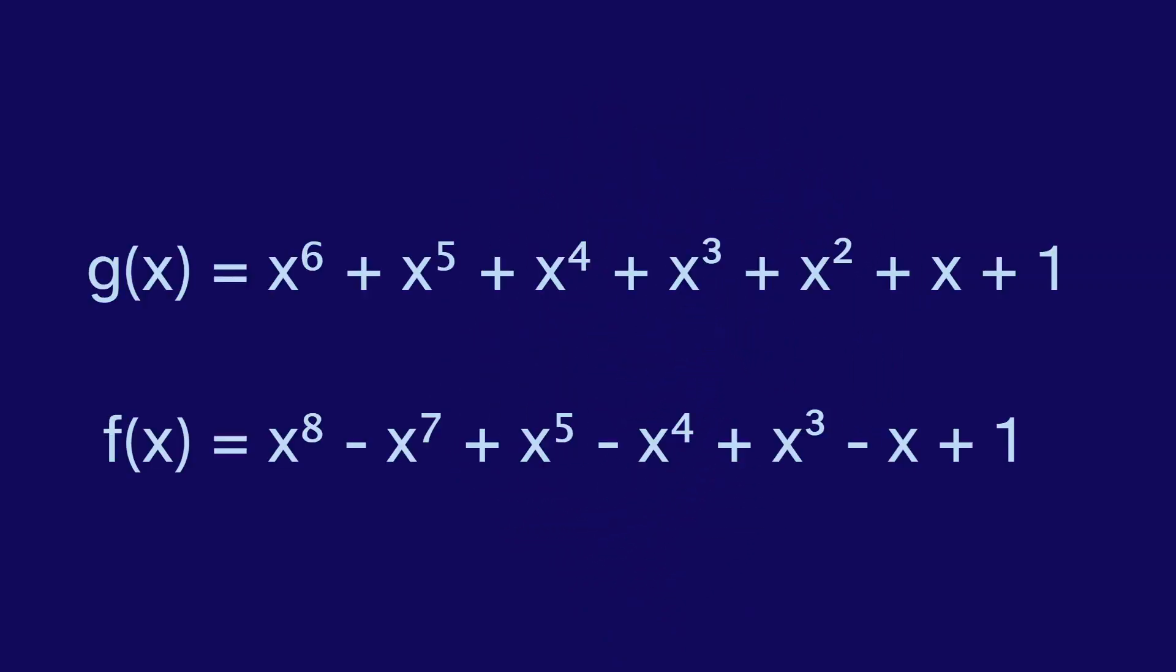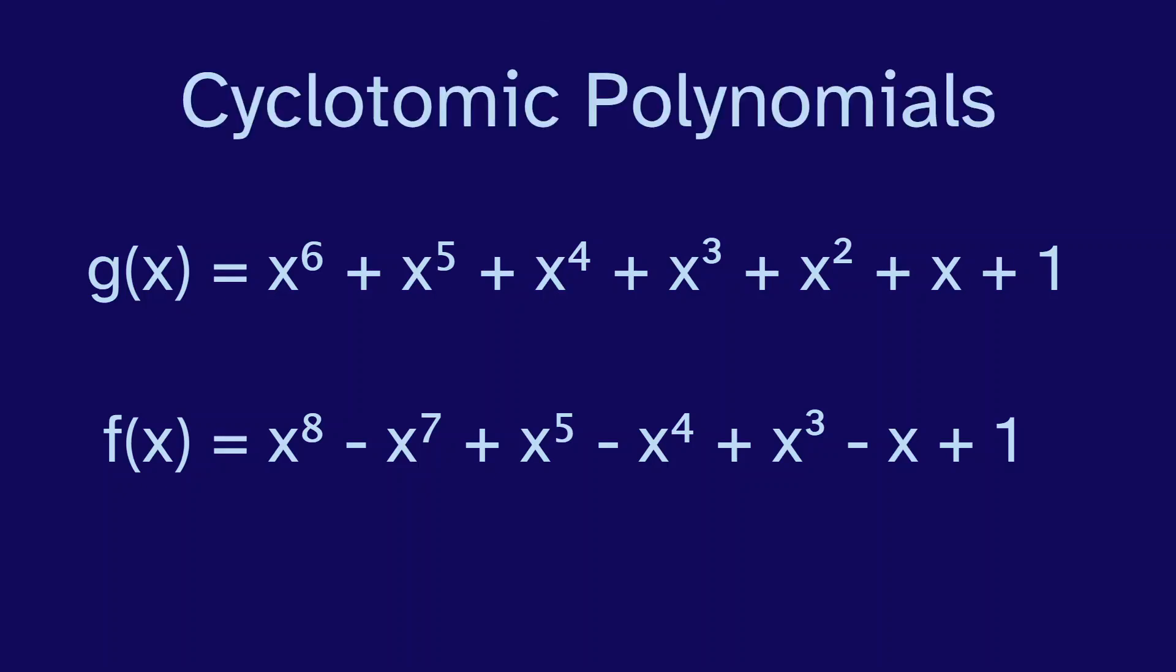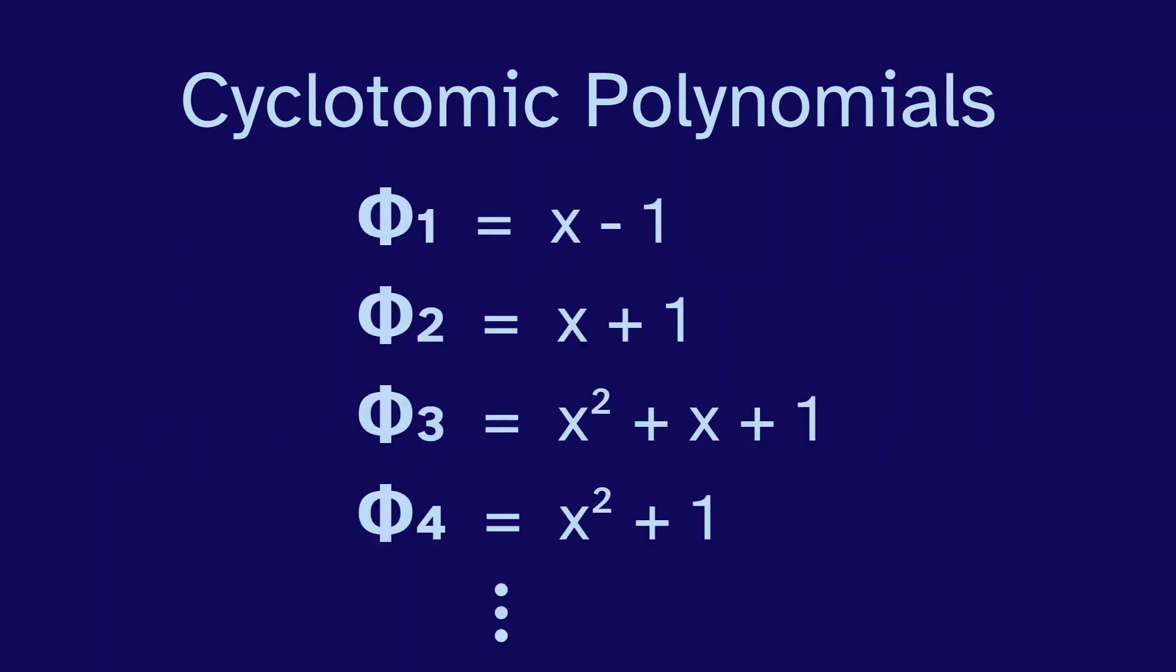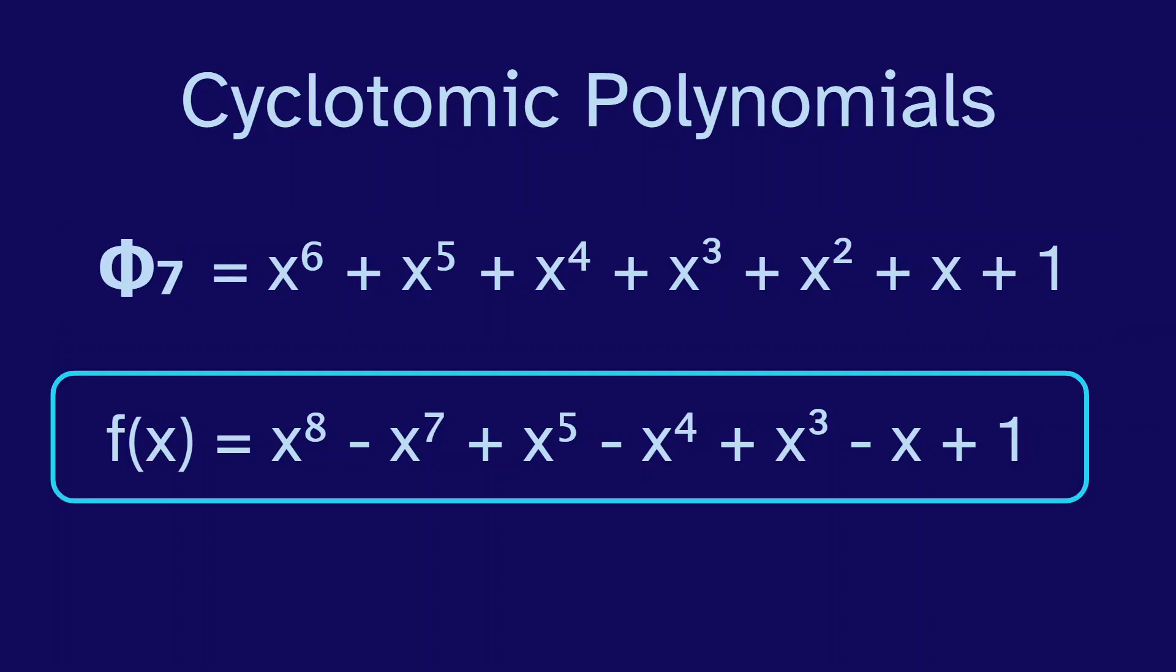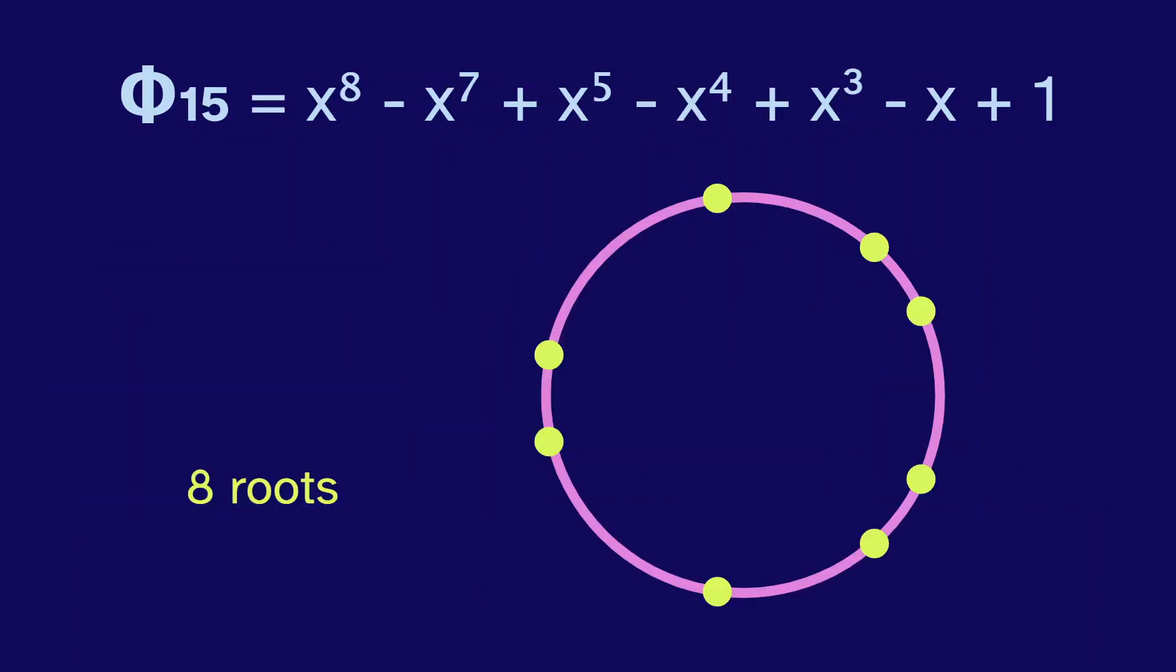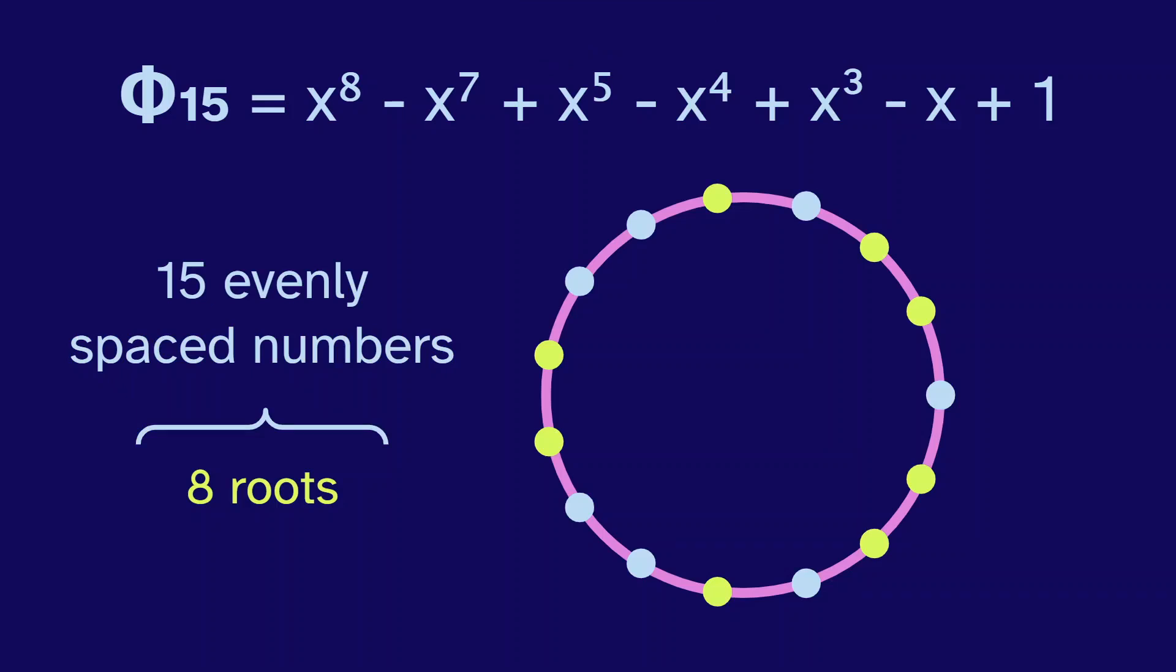These two polynomials are part of a family called the cyclotomic polynomials, which are defined by having certain roots all on the unit circle. There is a cyclotomic polynomial for each natural number. This is the 7th cyclotomic. And this is the 15th. But why is it the 15th if it has 8 roots?